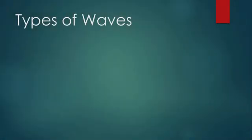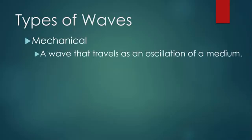There are two main types of waves. The first is called mechanical waves. This is a wave that travels as an oscillation of a medium. Examples of mechanical waves are water and sound. Water waves are the oscillation of water molecules, and sound waves are the oscillation of air molecules.